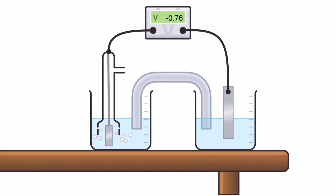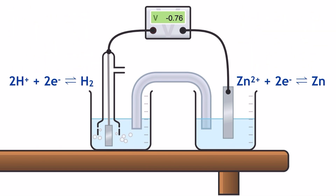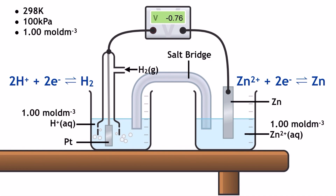Next up, we have the apparatus for measuring the zinc redox system's standard electrode potential. We have a solid zinc electrode in a solution of zinc(II) ions, represented in the half equation in a similar way to the copper half cell. The standard hydrogen electrode is on the left, and this time the voltmeter reading is negative 0.76 volts. This value and its sign is allocated as the standard electrode potential of the zinc redox system.